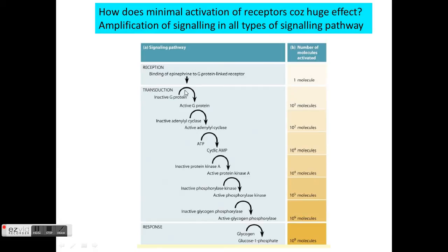As you can see, at the receptor site there may be just one or two molecules, but as the signal travels down — for example, through adenylyl cyclase — you can see that activation of adenylyl cyclase involves Gs, which leads to conversion of ATP to cyclic AMP, activation of PKA, and all the subsequent phosphorylation steps.